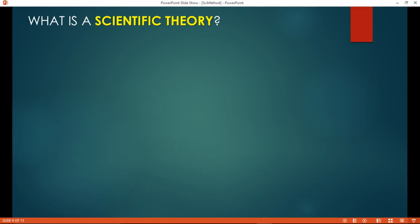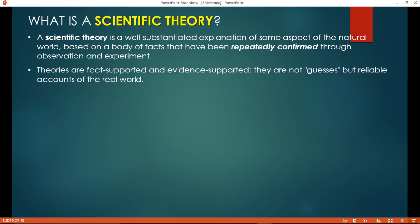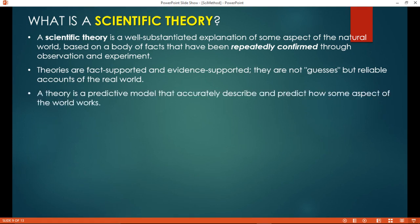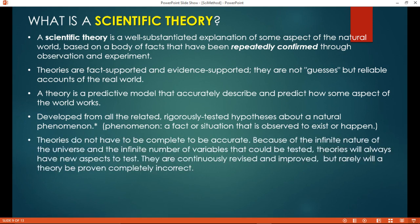What's a scientific theory? It's a well-substantiated explanation of some aspect of the natural world. It's been repeatedly confirmed through observation and experiment, even when there are still holes in the puzzle. They are not guesses, but reliable accounts of the real world that can predict what goes on in the places where we don't actually have complete data. It's a predictive model, and it's developed from all the related rigorously tested hypotheses about a natural phenomenon. A phenomenon is an event or occurrence or thing that exists. It's not something supernatural.